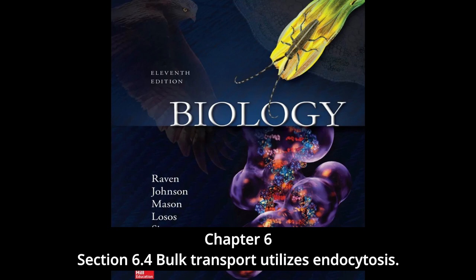Exocytosis is the reverse of endocytosis — the discharge of material from vesicles at the cell surface. In plant cells, exocytosis exports materials needed to construct the cell wall through the plasma membrane. Among protists, contractile vacuole discharge is a form of exocytosis. In animal cells, exocytosis provides a mechanism for secreting hormones, neurotransmitters, digestive enzymes, and other substances. In summary, cells import bulk materials by endocytosis and extrude or secrete material through exocytosis.